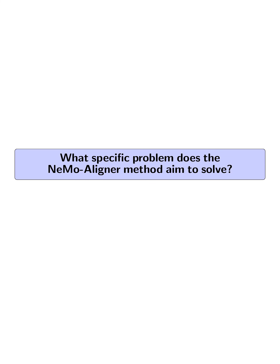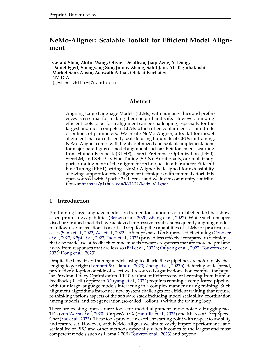What specific problem does the NEMO Aligner method aim to solve? The NEMO Aligner method aims to solve the problem of efficiently aligning large language models (LLMs) to follow user instructions for practical use cases, especially at extremely large scales.